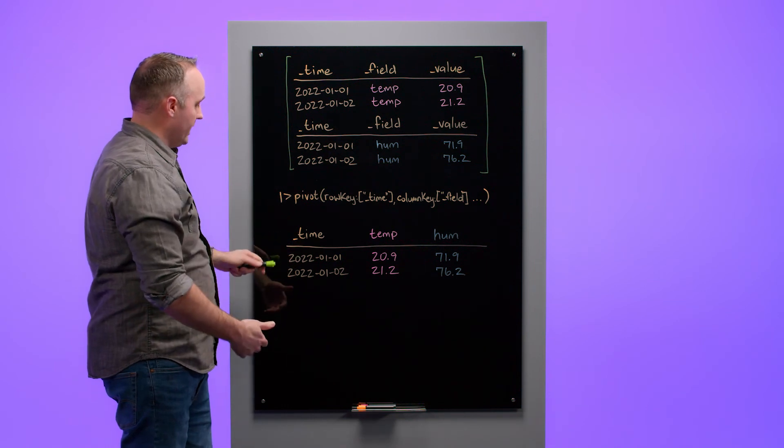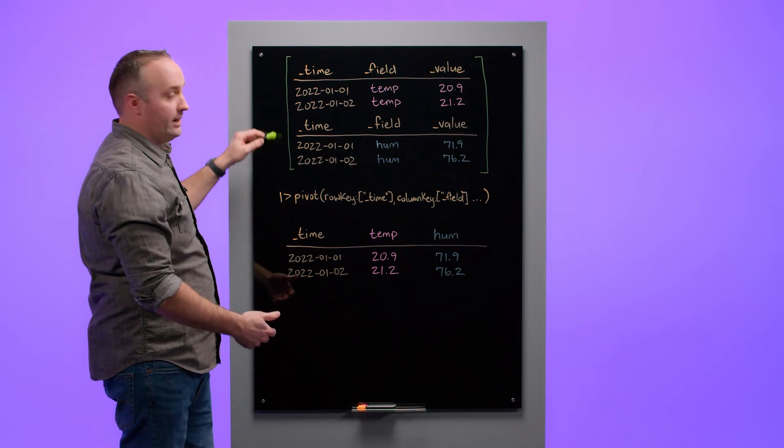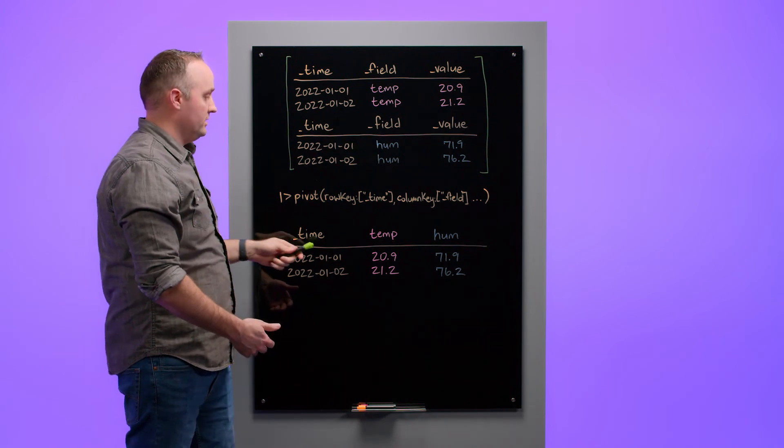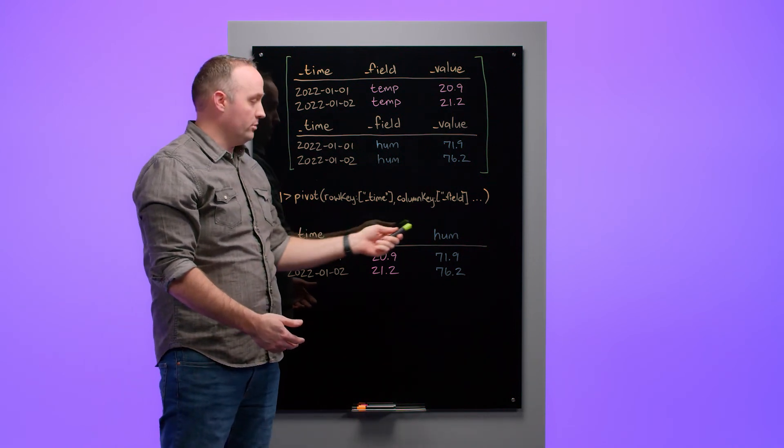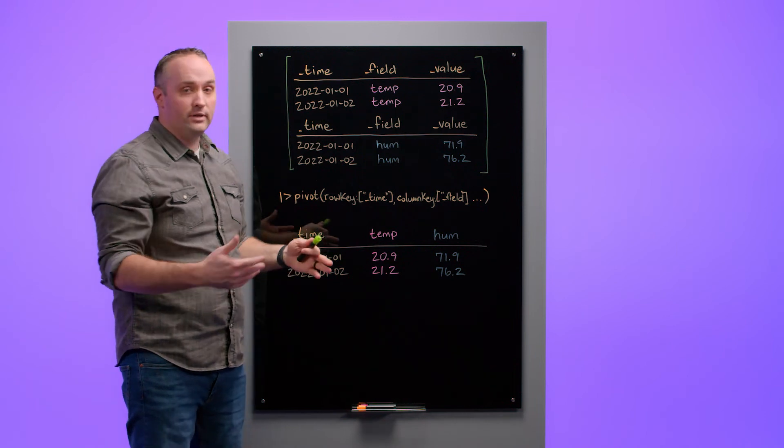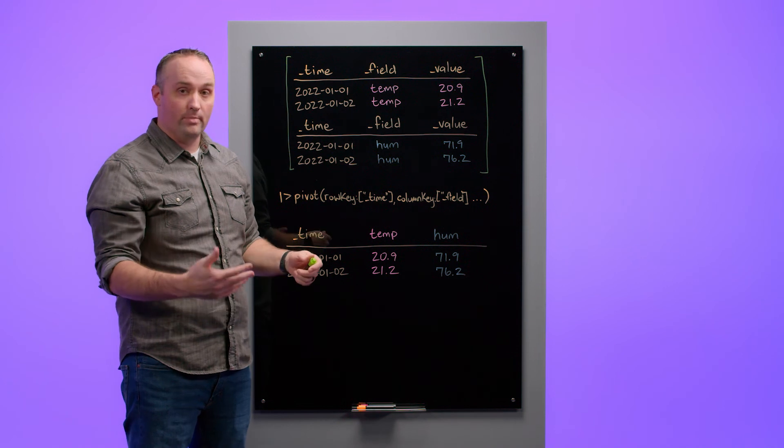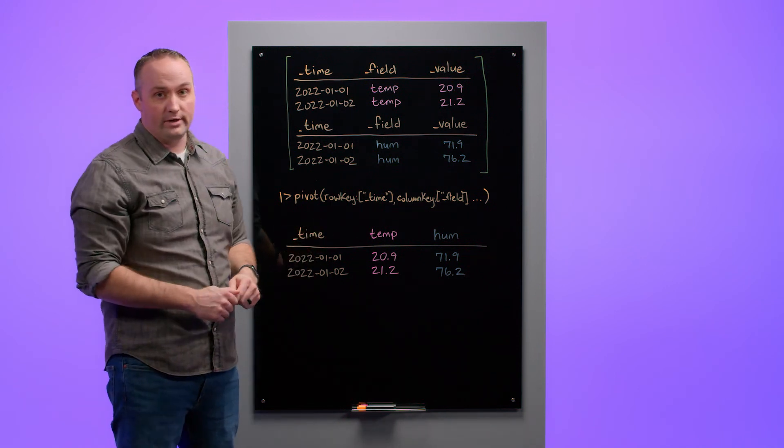So my output table will contain two rows, because I only have two unique timestamps in my input data. For each of those rows, I have a temperature column and a humidity column. With these fields aligned into rows based on time, I can then perform mathematical operations or comparisons on these two different field values.